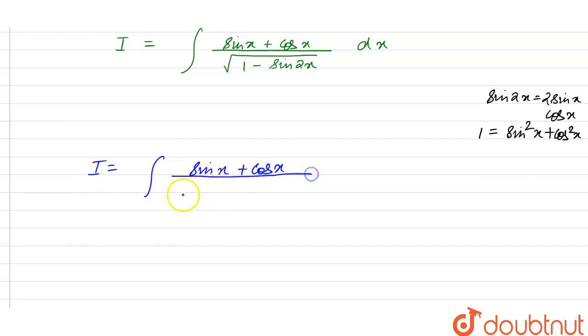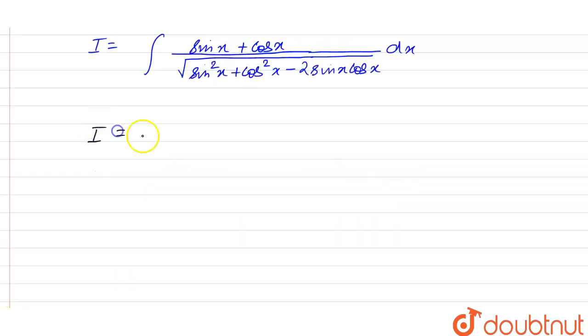And we have under root of, in the denominator we have sine square x plus cos square x and minus 2 we have sine of x cos of x, and we have with respect to dx here.